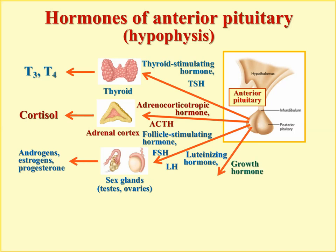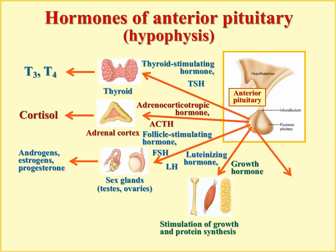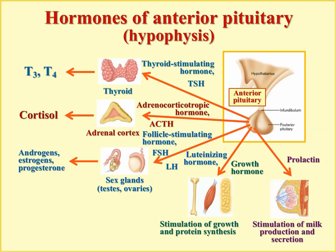Growth hormone acts on the body as a whole — on bone, muscle, and fat tissue — and its most important action is stimulation of growth achieved by protein synthesis stimulation. One more anterior pituitary hormone, prolactin, stimulates the mammary gland, which is not an endocrine but an exocrine gland that produces milk — so prolactin stimulates milk production and secretion. In total, six hormones are produced by the anterior pituitary: TSH, ACTH, FSH, LH, growth hormone, and prolactin.